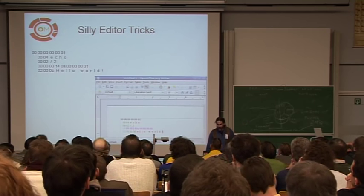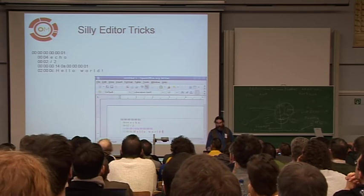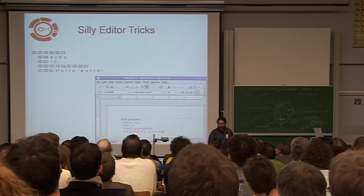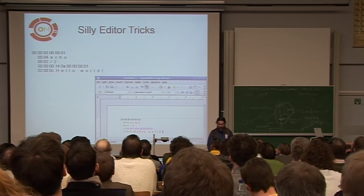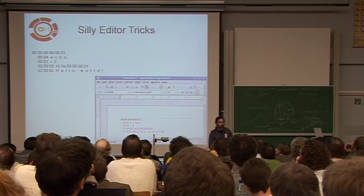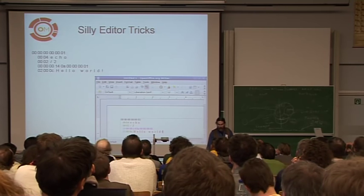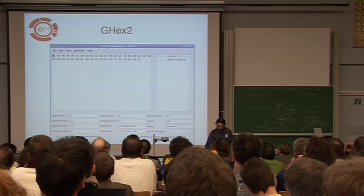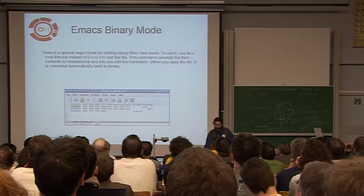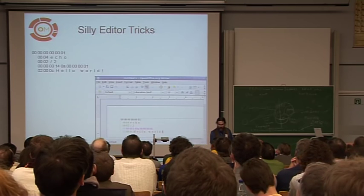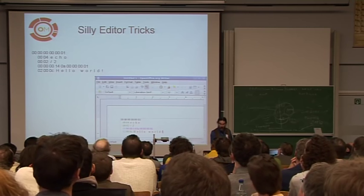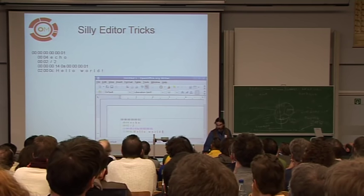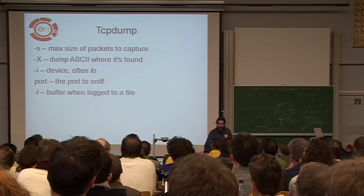I actually do silly editor tricks a lot. A lot of times I'll take a hex dump from GHex and display it, put it into the scratch buffer of Emacs, or in this case OpenOffice so I could do color. And a lot of times, just putting carriage returns between where all the fields end sometimes makes things a lot more sensible. If this 'echo hello world' thing is all on one line, it's a little hard to figure out what it does. Here I've got it all broken down into the different fields for all the strings, and you can sort of see how there are byte counts and other things.